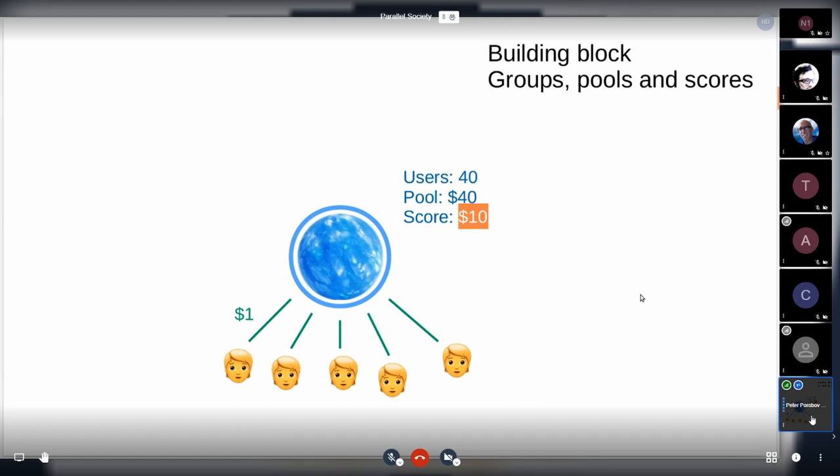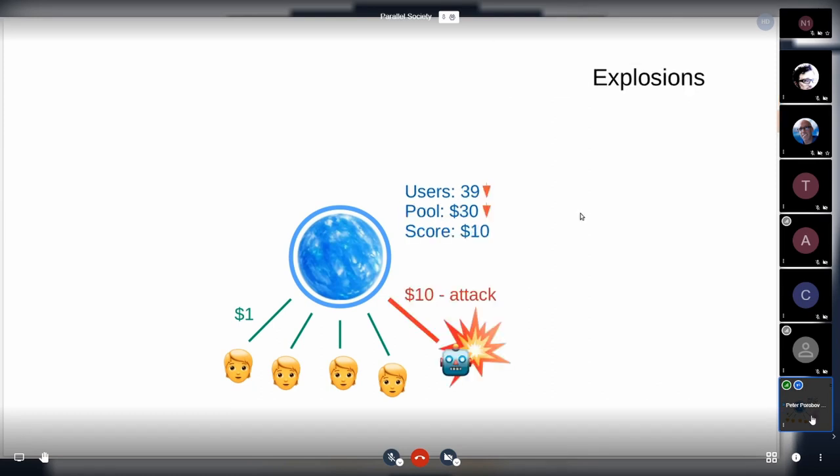How do explosive bots work? The score is the price of explosion. If someone decides to explode, this person will get the score - the amount of money which is equal to his or her score. He will get this money from the pool and escape forever.